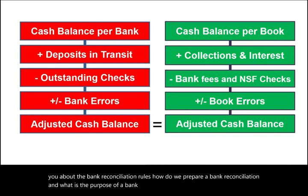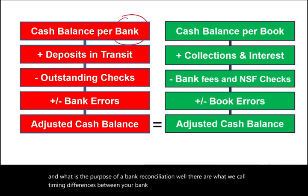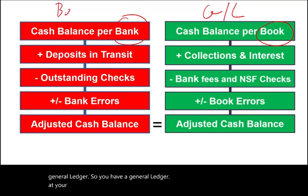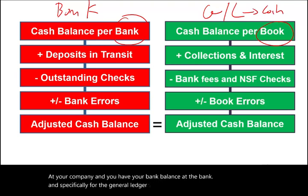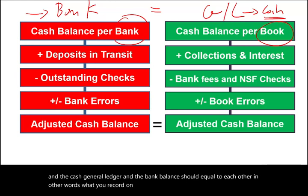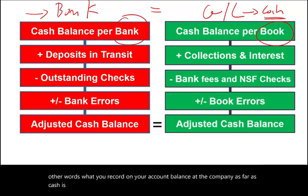There are what we call timing differences between your bank balance and your book general ledger. You have a general ledger at your company and you have your bank balance at the bank. Specifically, we're discussing the cash general ledger. The cash general ledger and the bank balance should equal to each other — what you record on your account balance at the company as far as cash is concerned should equal to your bank account.